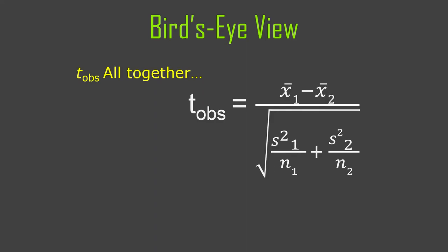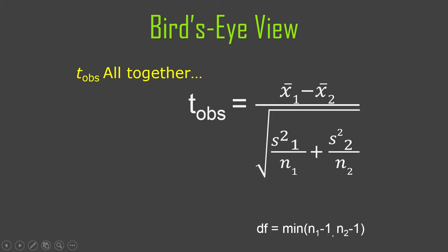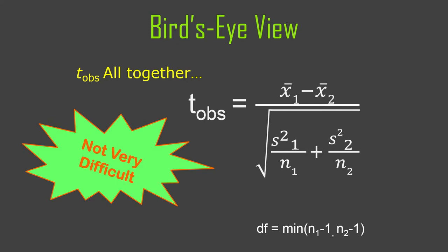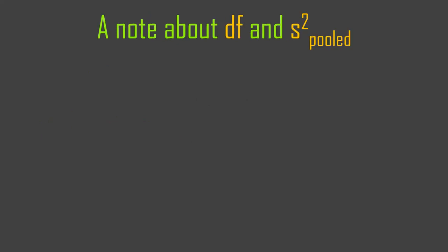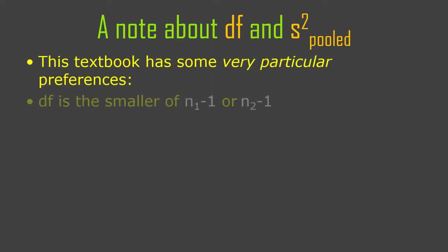Here's the altogether formula for t-observed. It's just mean 1 minus mean 2 over the standard error — I just plug in the standard error formula directly. So if you want to calculate t-observed for an independent samples t-test, that's it. The degrees of freedom to look up your t-critical are the smaller of n1 minus 1 or n2 minus 1. This is not rocket science — although rocket scientists probably use t-tests quite a lot. You can ignore the next details if you want and just do what the textbook says, but if you're continuing in stats, you should know this quirk.